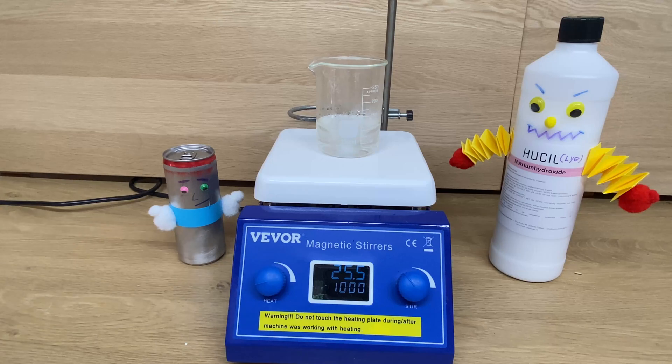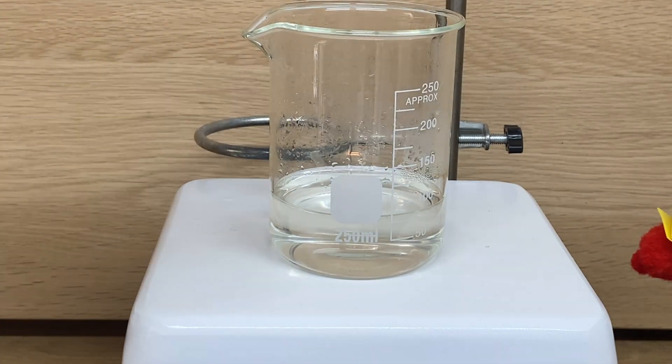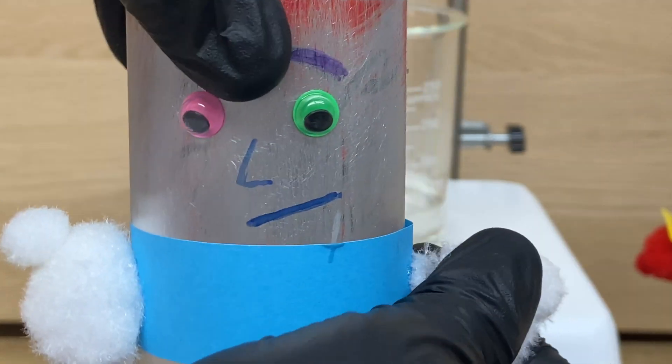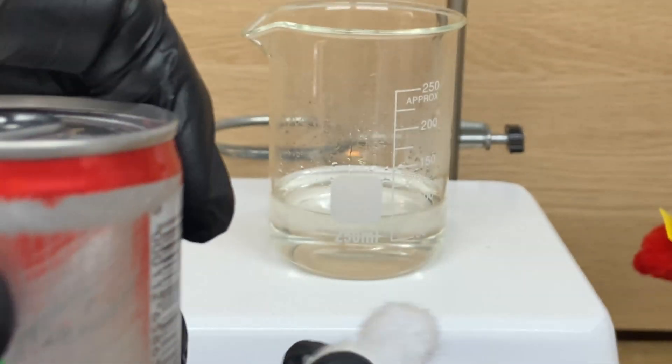In the redox reaction, reduction is gaining electrons. The scientists that thought this was a good idea to name it reduction should have been redoxed themselves. Yes, it is logical but annoying for everyone that doesn't have a chemistry degree. And oxidation is losing electrons in a chemical reaction.